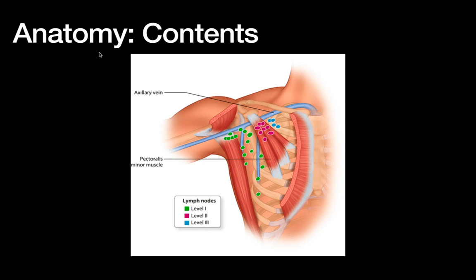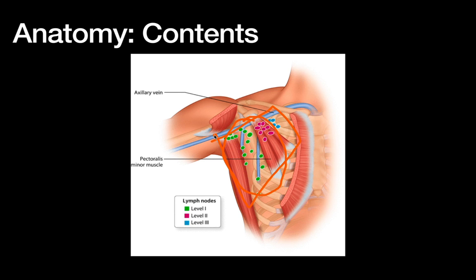Before focusing on those structures in detail, let's remember why we're operating on this area — typically for cancer operations where we're looking to take out nodes with cancer or sample lymph nodes to see if cancer has spread. These lymph nodes are defined in levels based on the pectoralis minor: level one is lateral to the pec minor, level two is posterior to it, and level three is medial. For breast cancer we typically only take level one and two, as going deeper risks more morbidity near critical structures.